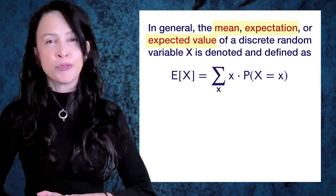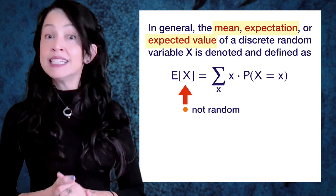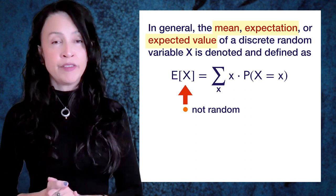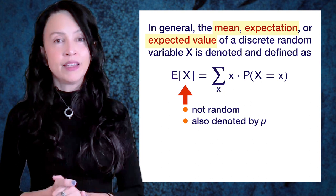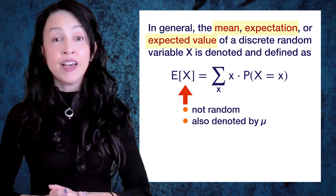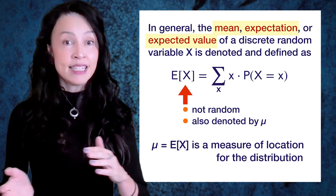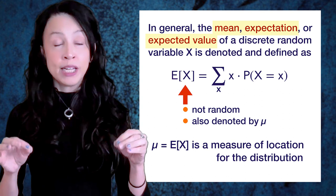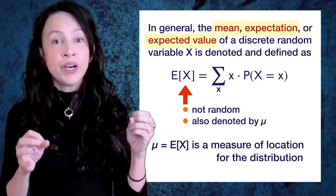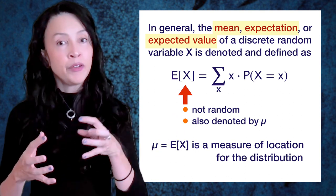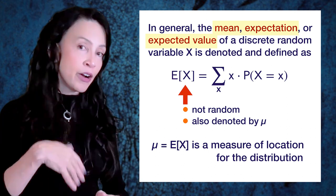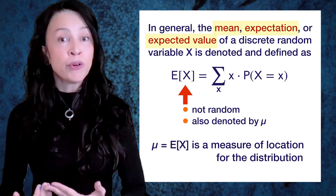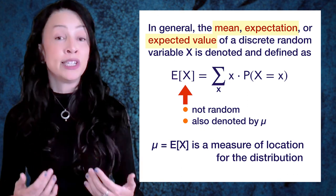Note that the expected value of X is not random - we've averaged the randomness out. A common symbol to denote the expected value of X is the Greek letter mu for mean. Mu, or the expected value of X, is a measure of location for the distribution. It's kind of a central value - not literally in the center of the numbers, because that would be 1, but in the center when you weight the values by their respective probabilities. In our example, we got 5/4, a little bit more than 1, because the value 2 had more weight or probability than the values 0 and 1.